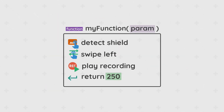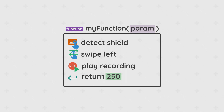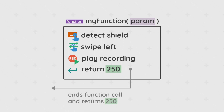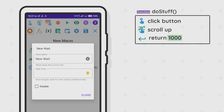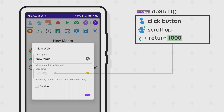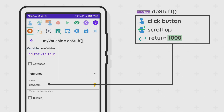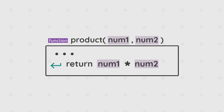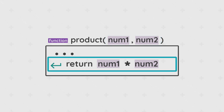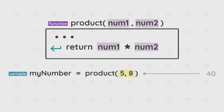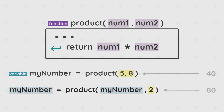Functions are also allowed to return a value, usually at the end of the function. Returning a value also ends a function call instantly. The value being returned can be passed into anywhere in the macro — into options or assigned to variables. Here's an example of a function: it takes in two values from its parameters and returns their product. The return value can then be passed into options or other variables.